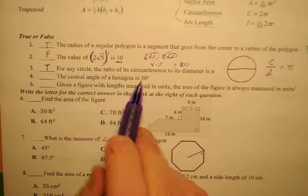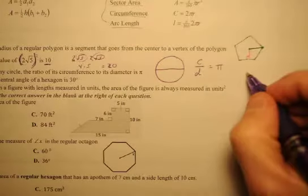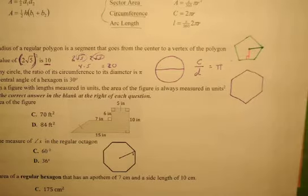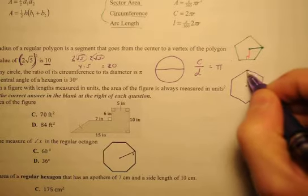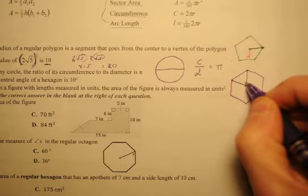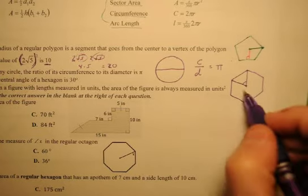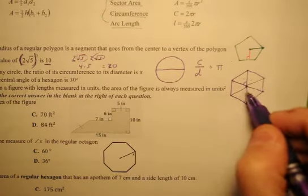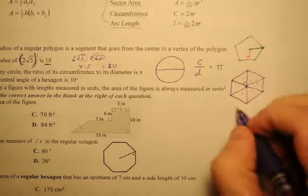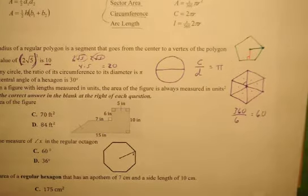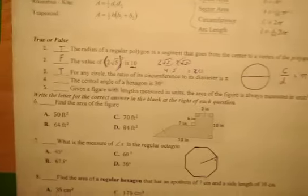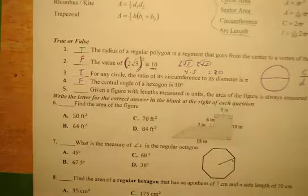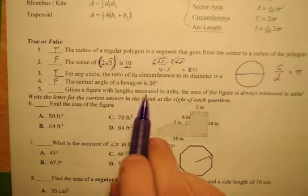Next, the central angle of a hexagon is 30. Let's draw a hexagon. Six sides. This is a central angle right here. Now how many central angles are there? One, two, three, four, five, six. So if you do 360 divided by 6 you get 60. So therefore the central angle of a hexagon is not 30, we'll put false for that.